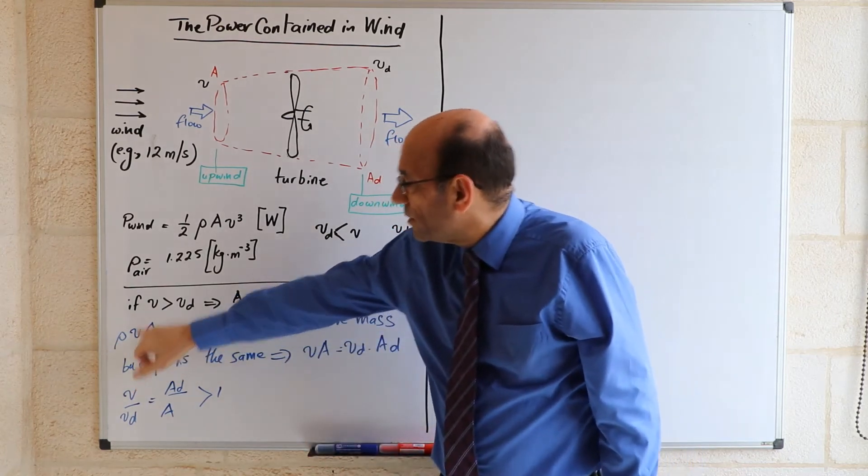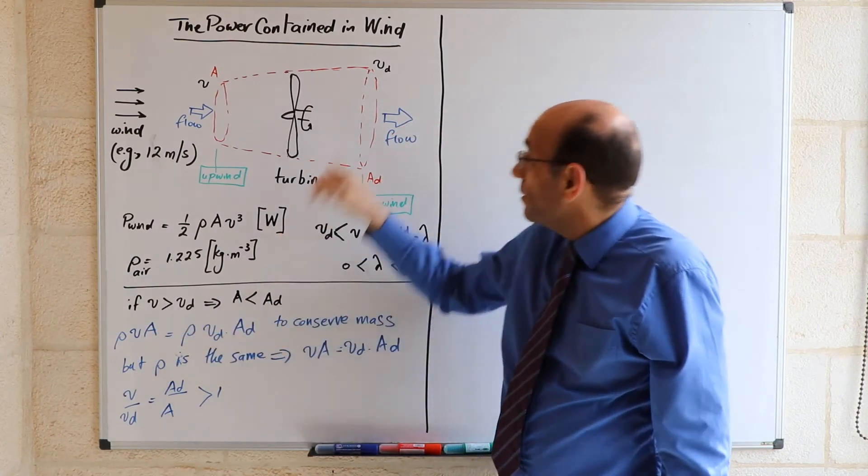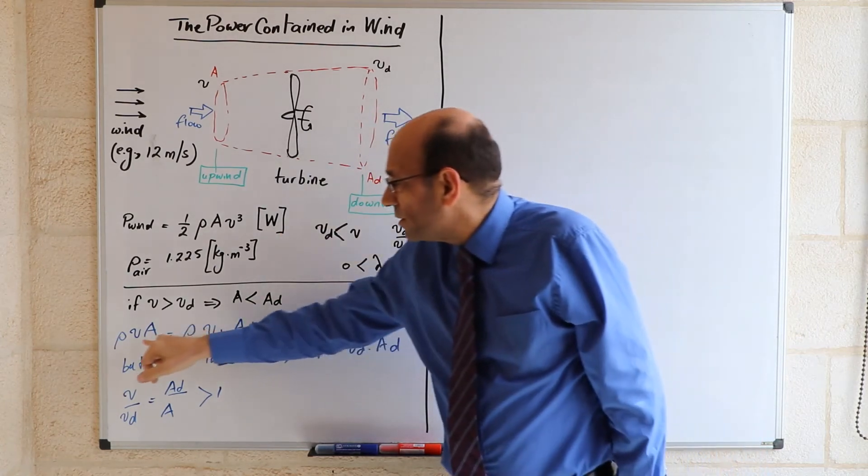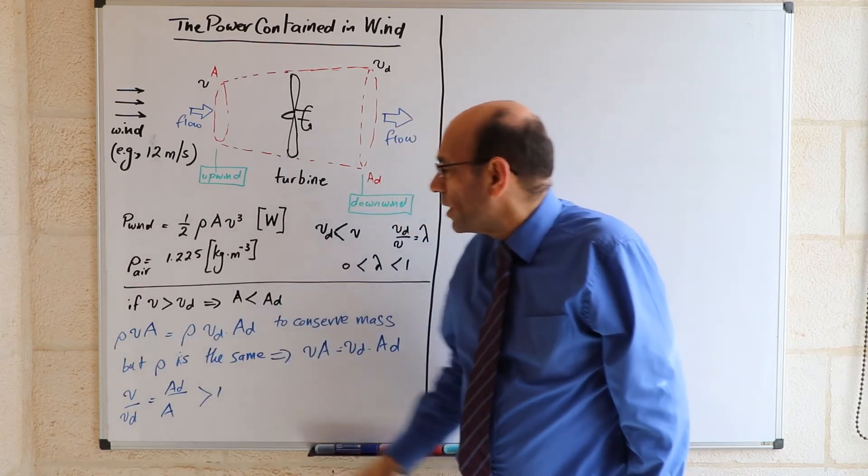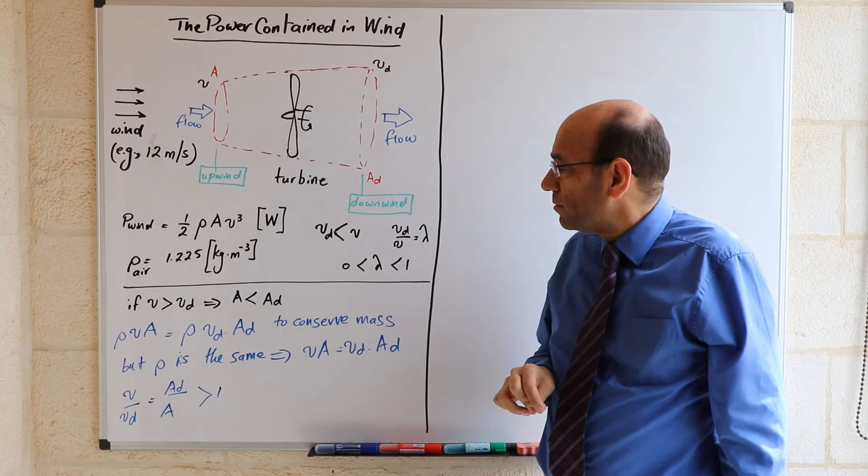So the mass flow rate at this point should still be equal to the mass flow rate at this point, which means that rho V times A is equal to rho VD times AD in order to conserve the mass.